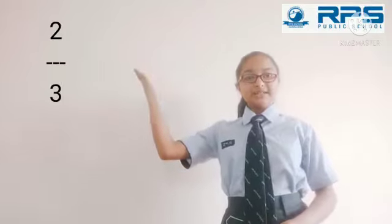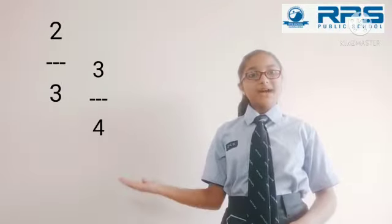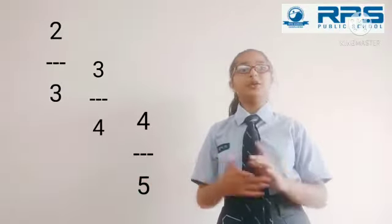Let's take a few examples of rational numbers. Here we have 2 by 3, 3 by 4, 4 by 5, and more.